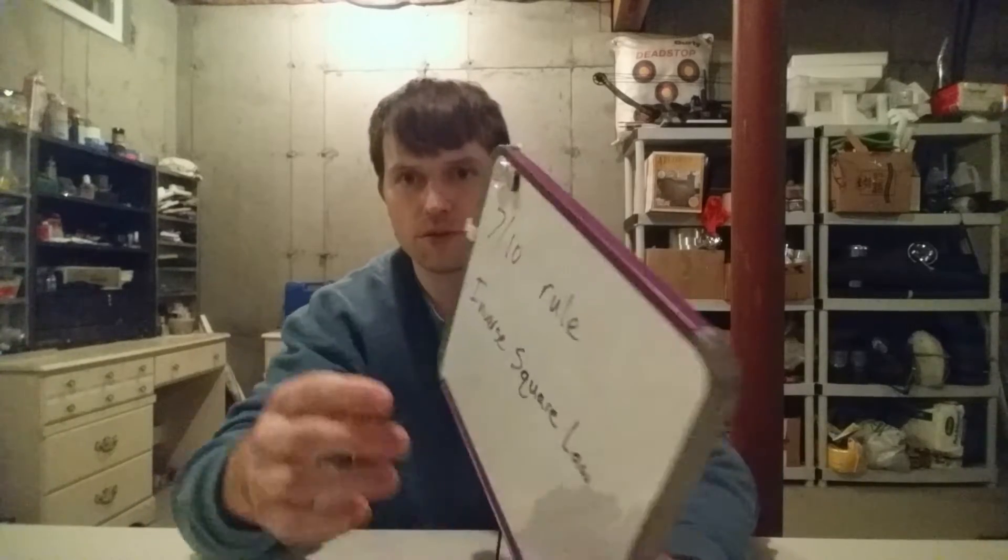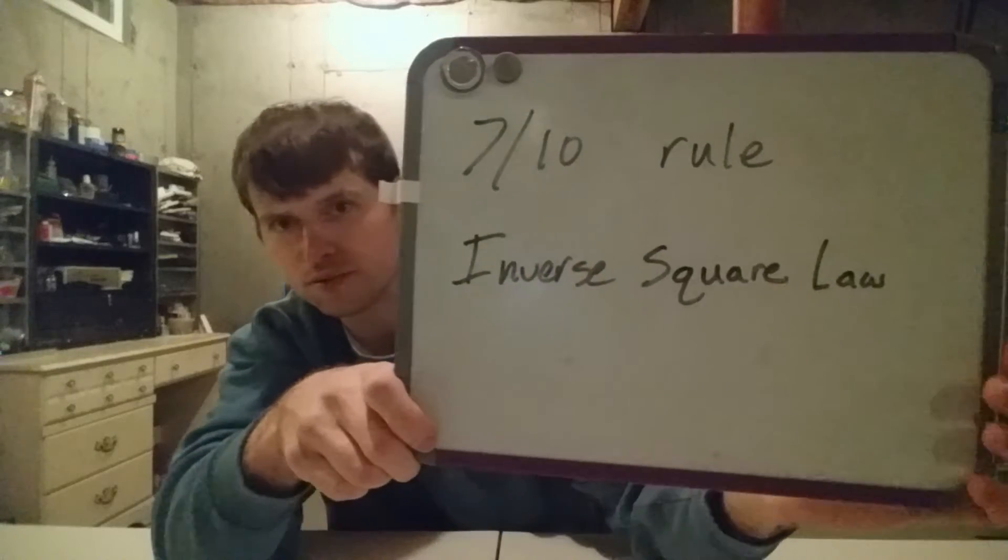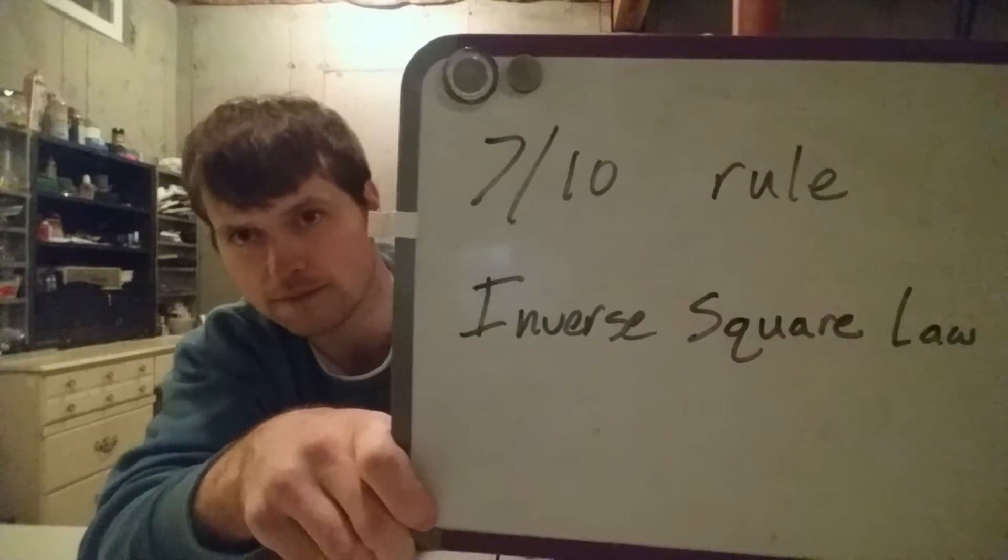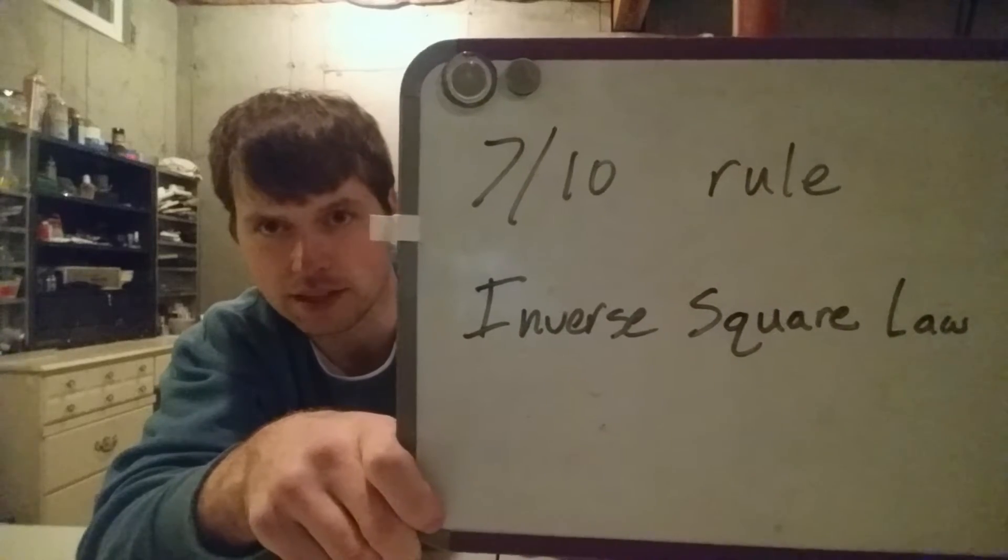Whether it's an attack or a disaster, either intentional or unintentional, the two formulas you need to know are the 7/10 rule and the inverse square law.